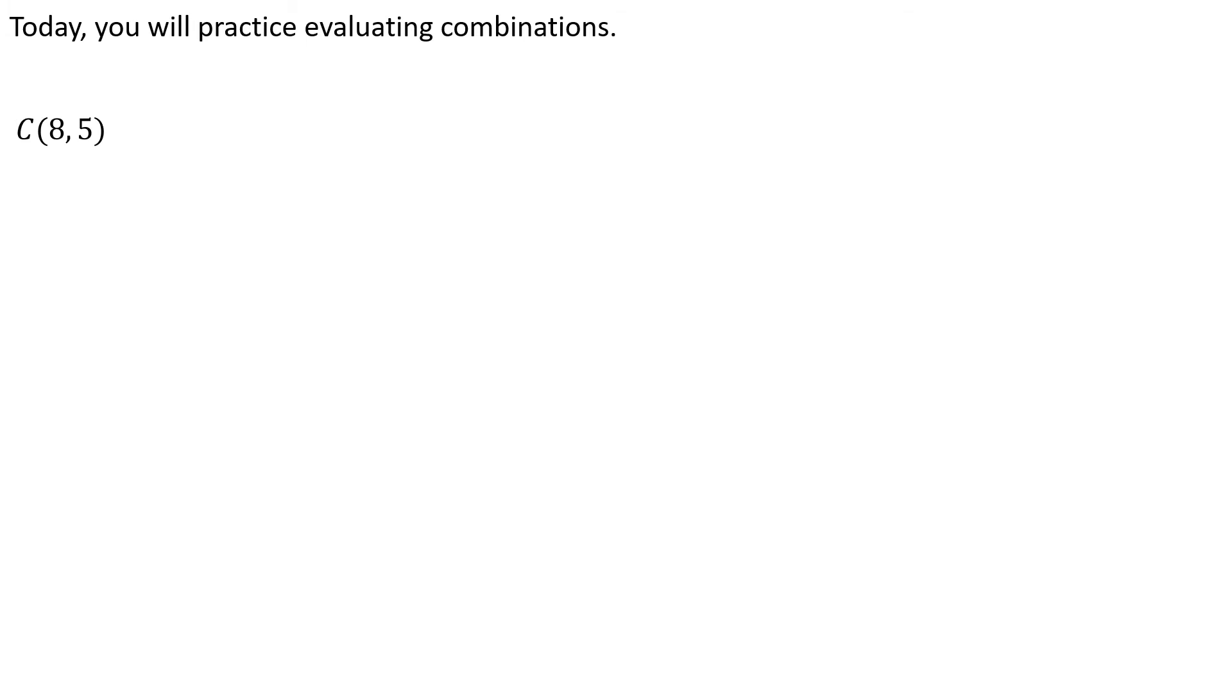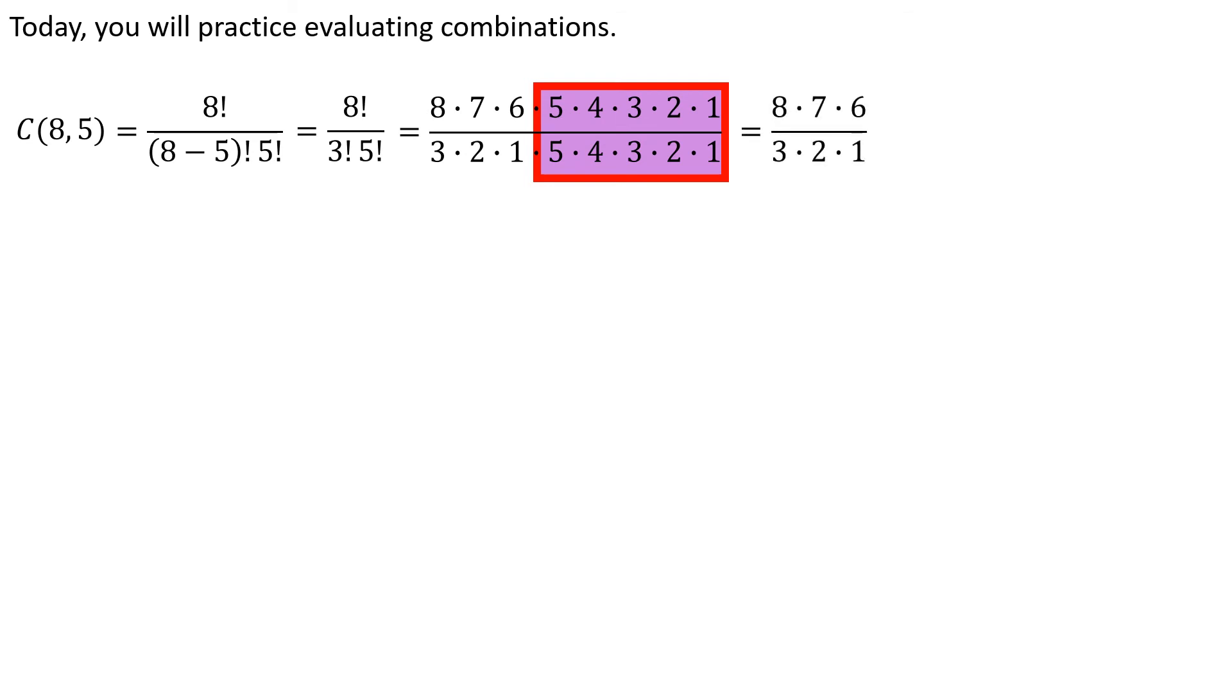Combination of 8 take 5. So I just plug in my number 8, plug in my number 5 in the appropriate places. Again, at first glance it looks like a whole lot of work, except we can do a lot of canceling. And on this one I'm going to do a little bit different. I'm going to say, hey, 3 times 2 times 1, that's just 6 on the bottom. Cancel out that 6. I'm left with 8 times 7, which is 56.